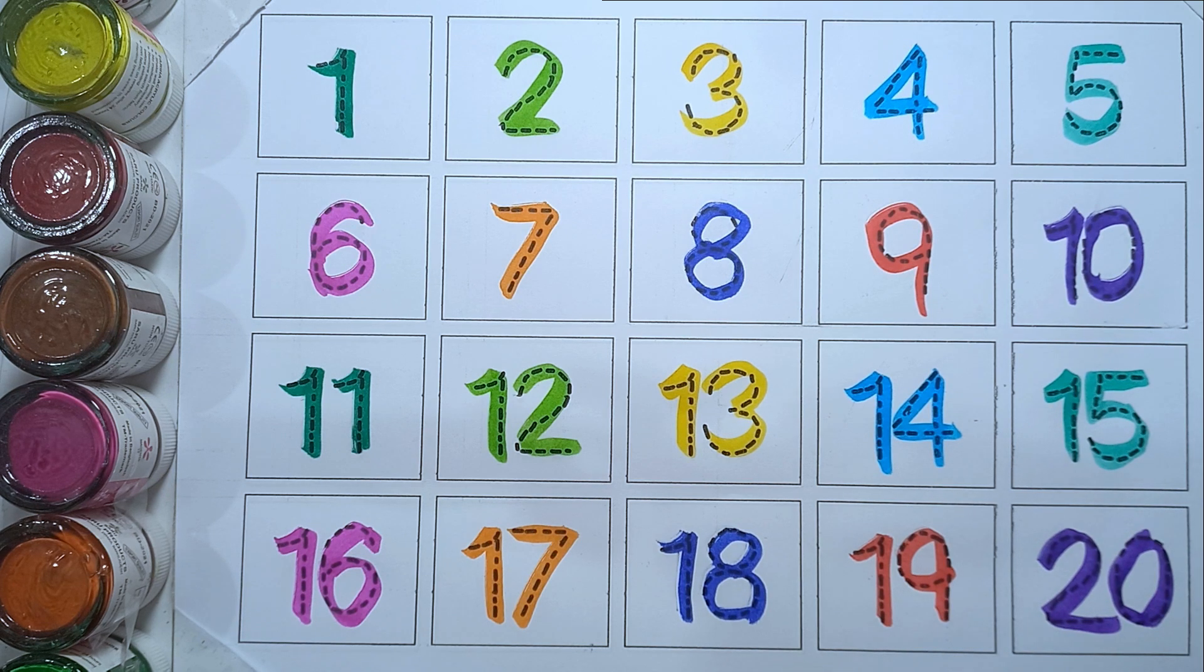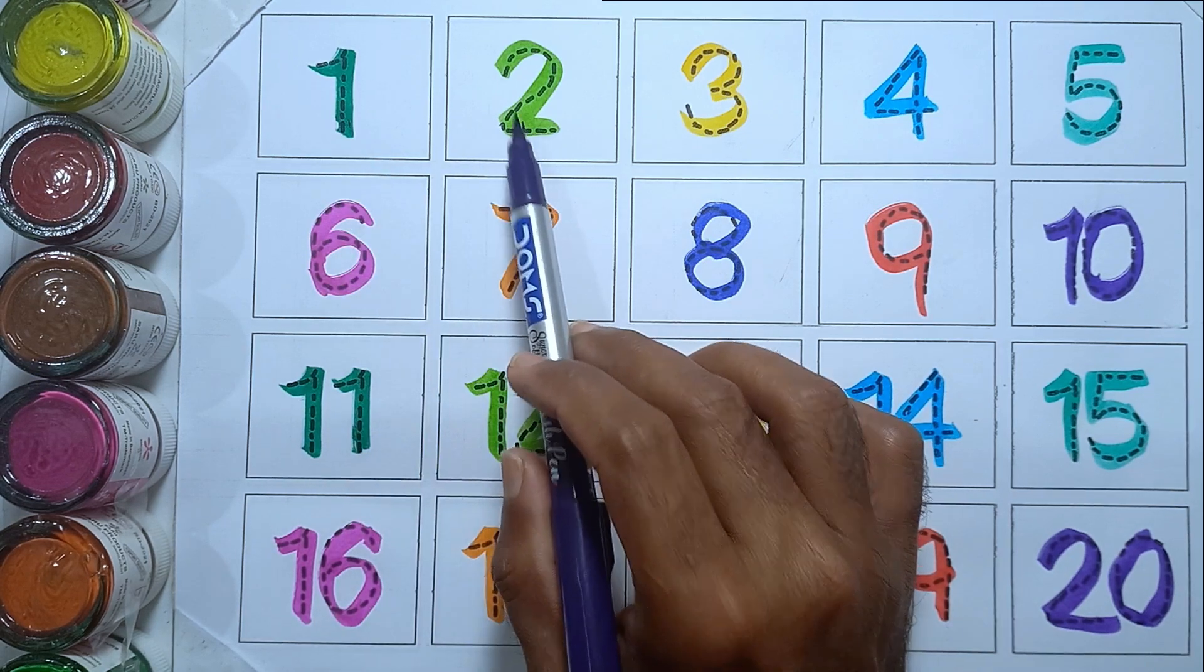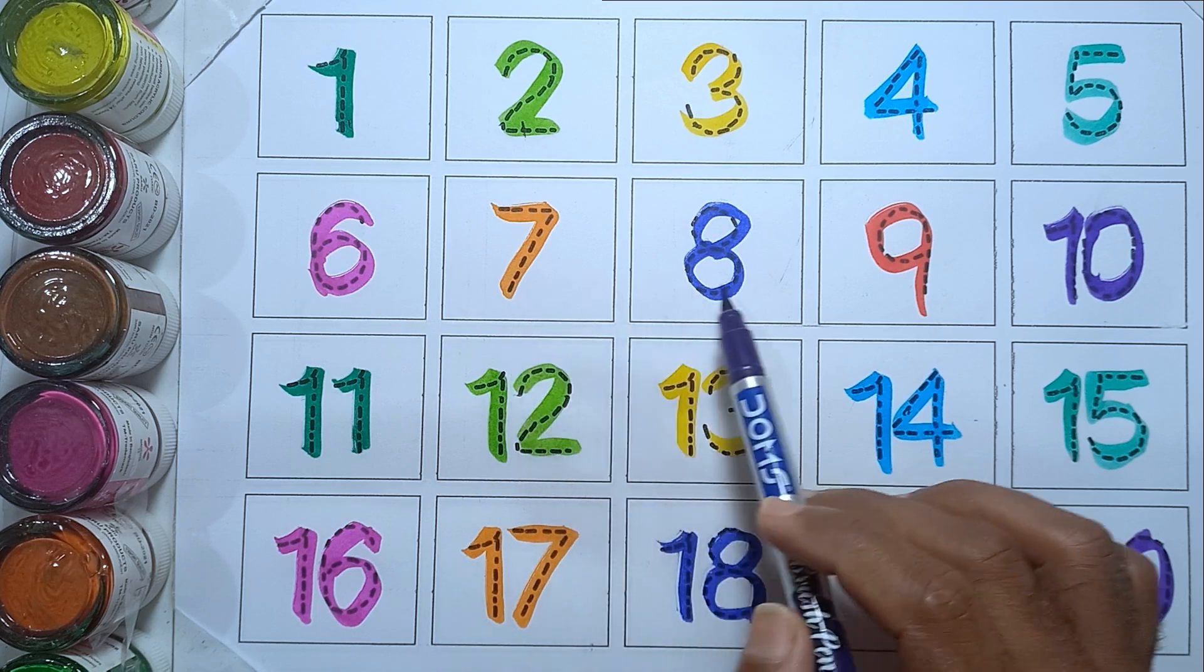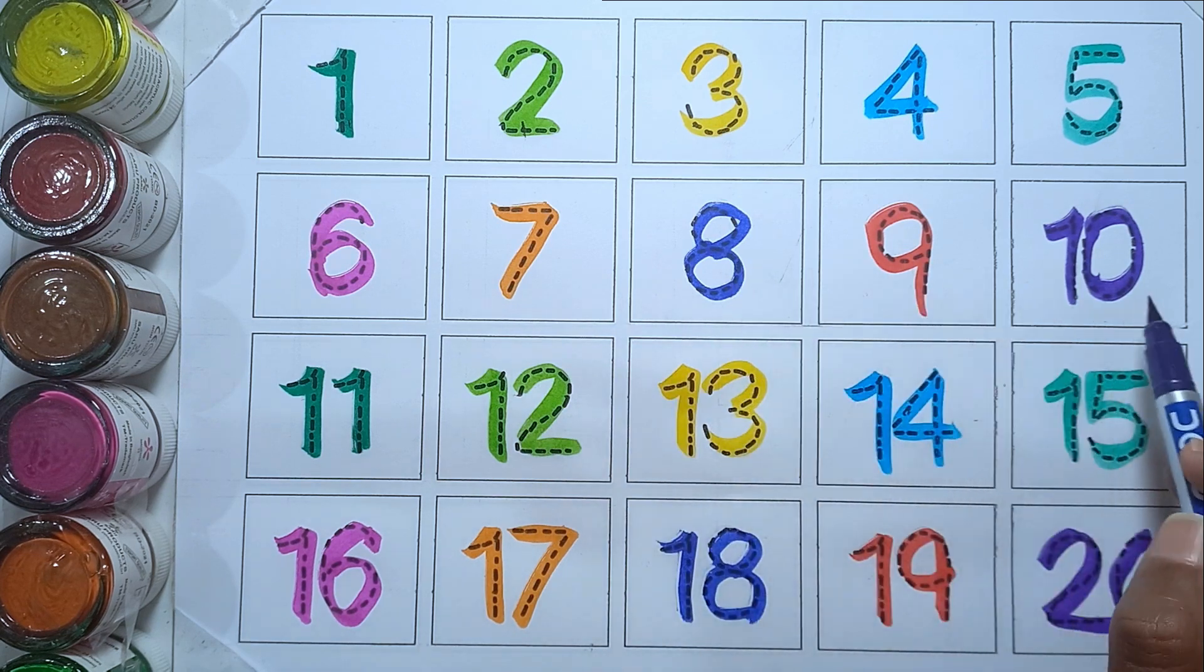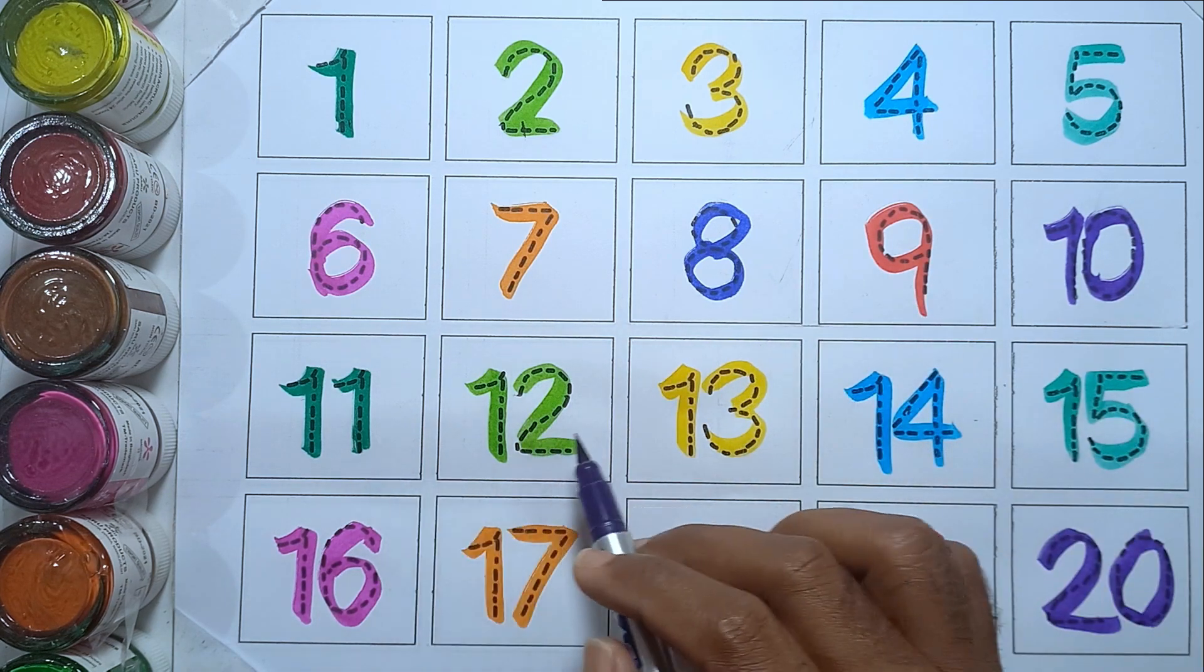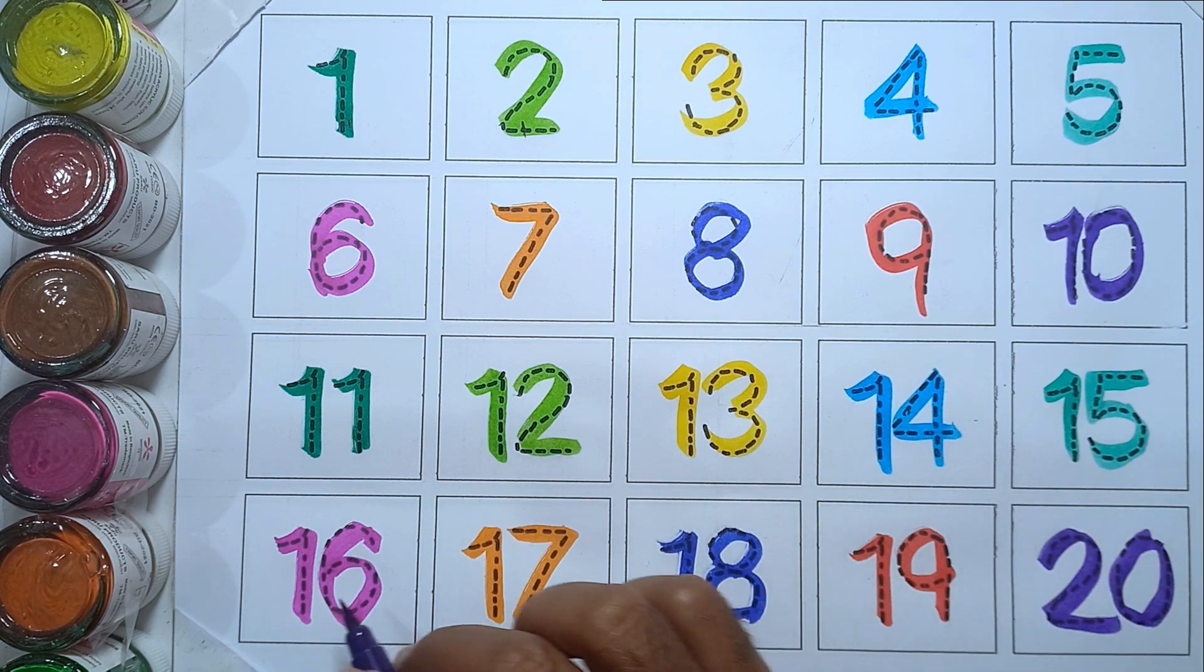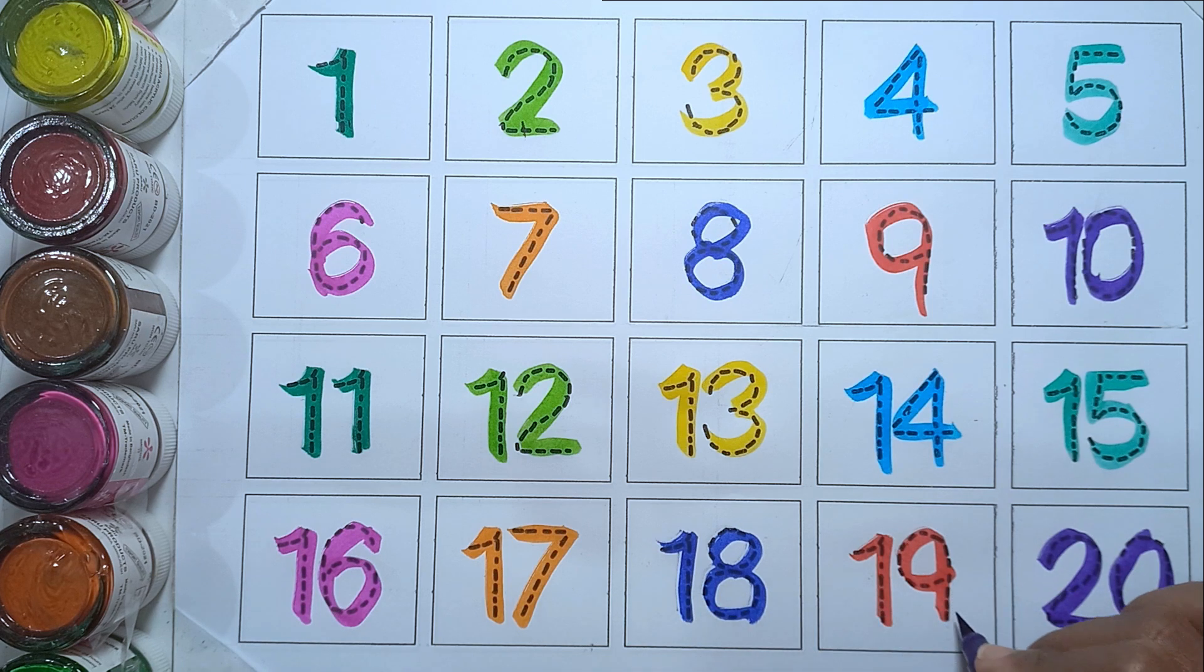Let's say again. One, two, three, four, five, six, seven, eight, nine, ten, eleven, twelve, thirteen, fourteen, fifteen, sixteen, seventeen, eighteen, nineteen, and twenty.